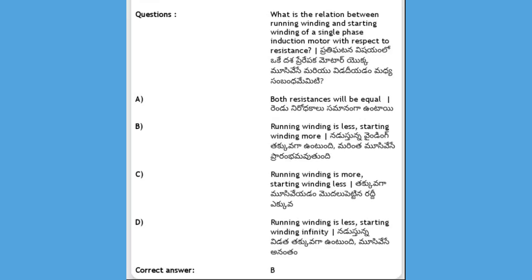What is the relation between the running winding and starting winding of a single-phase induction motor with respect to resistance? Options: both resistances are equal, running winding is less and starting winding is more, running winding is more and starting winding is less, running winding is less and starting winding is infinity. The answer is B, running winding resistance is less and starting winding resistance is more.